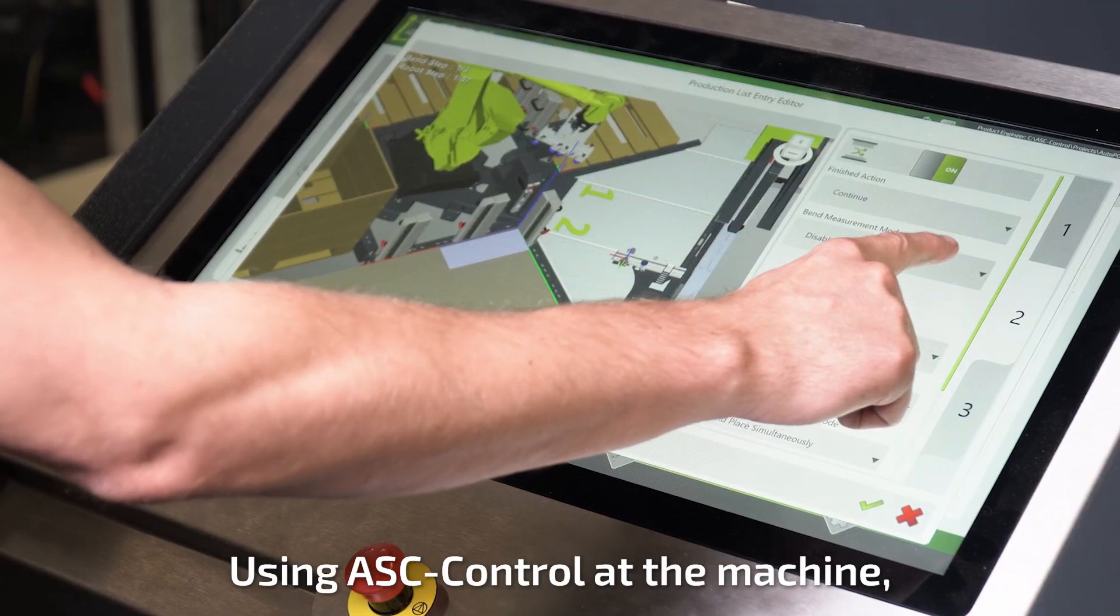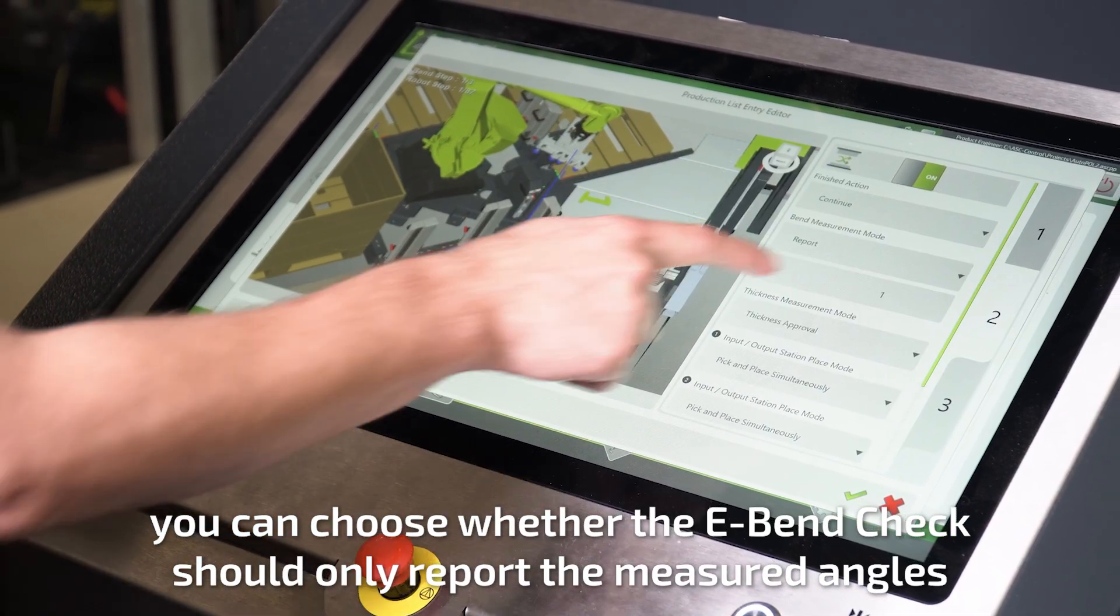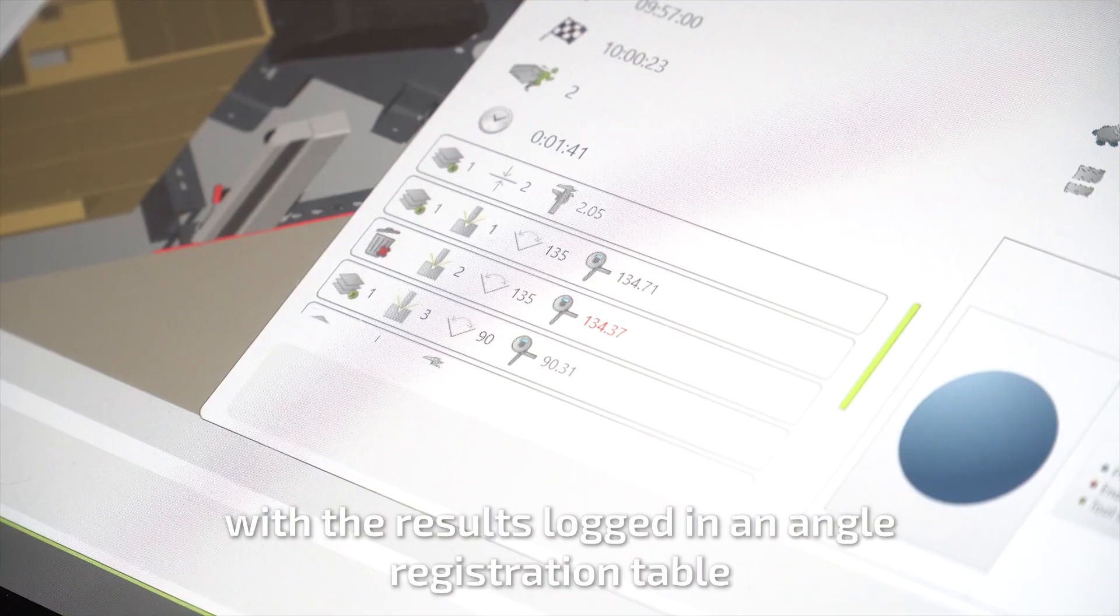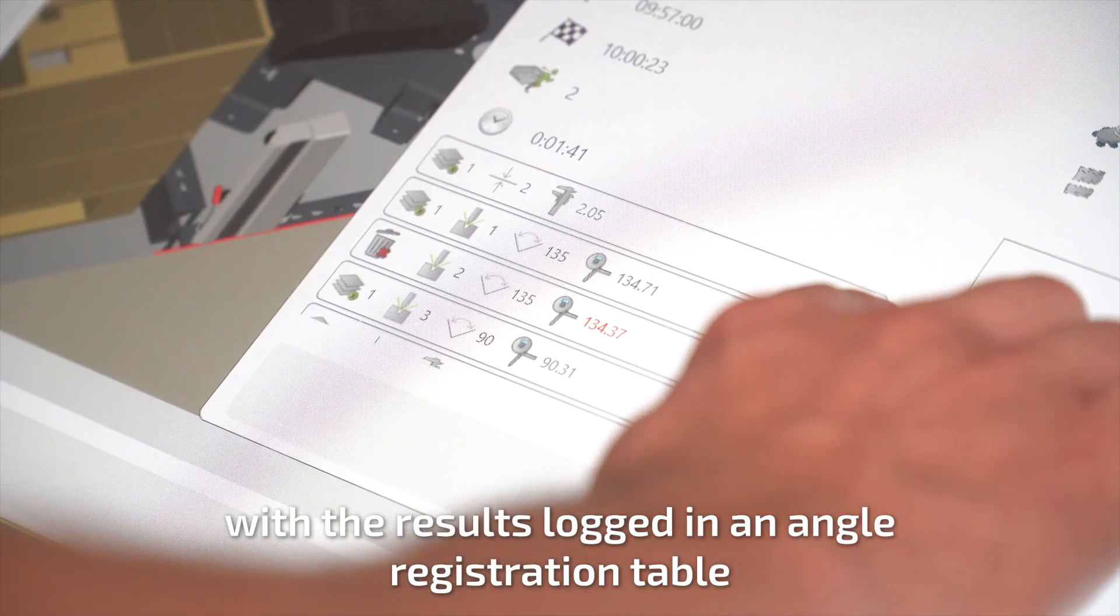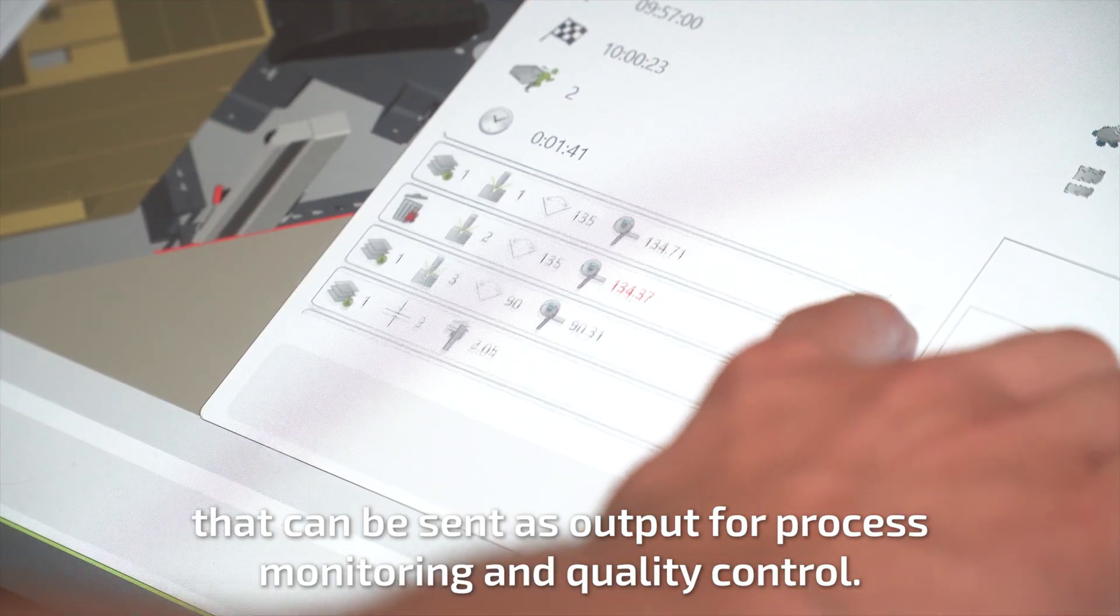Using ASC control at the machine, you can choose whether the eBendCheck should only report the measured angles, or also apply corrections for the following products. With the results logged in an angle registration table that can be sent as output for process monitoring and quality control.